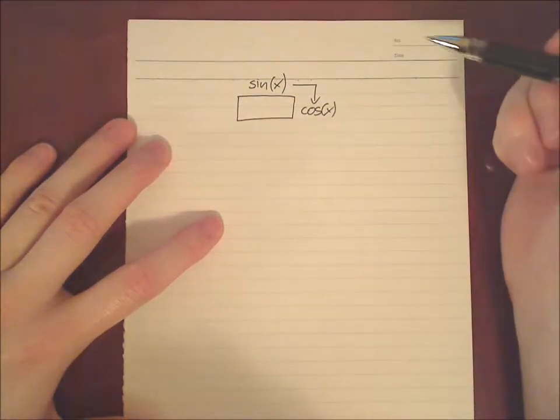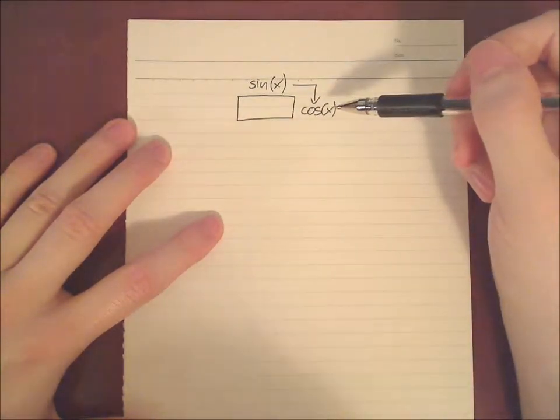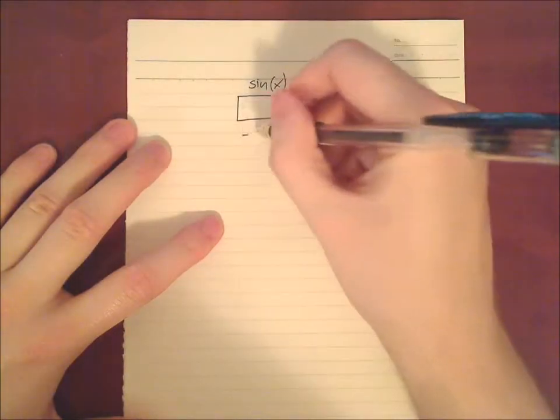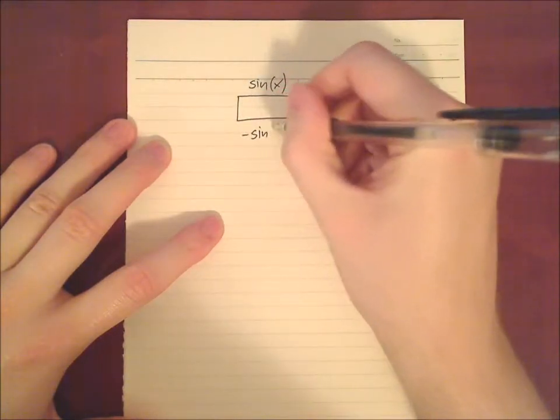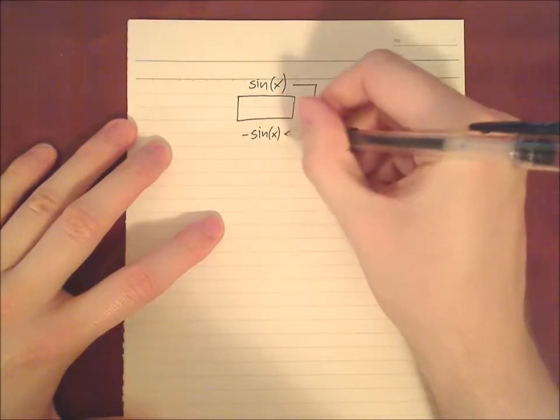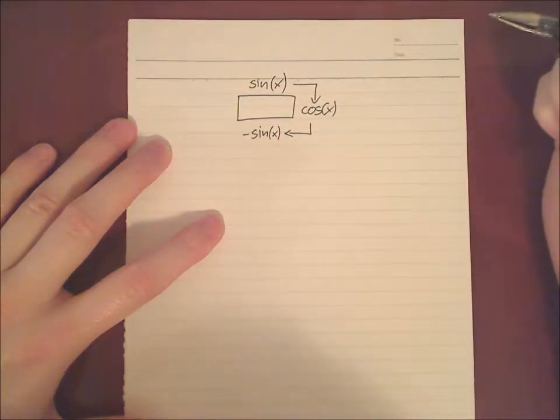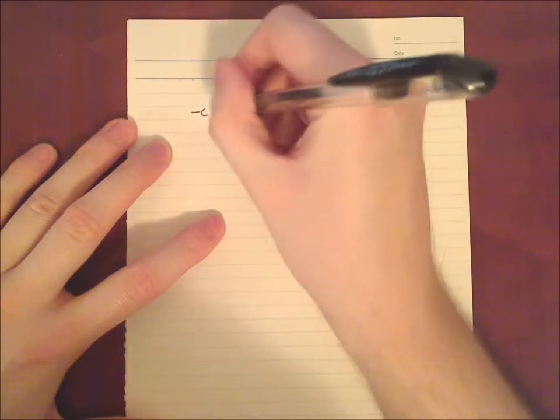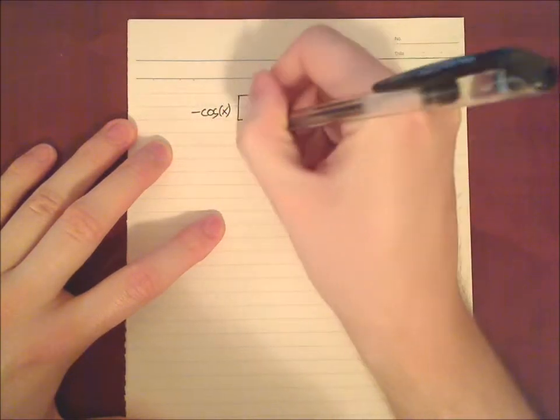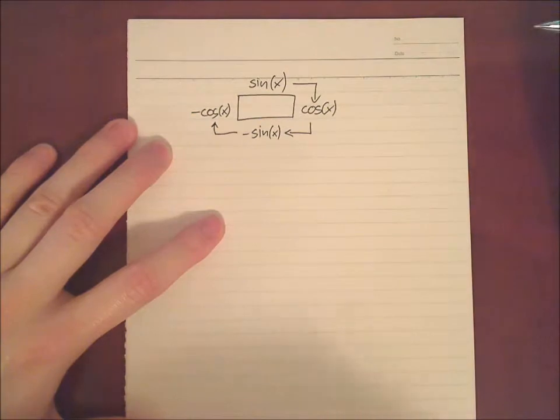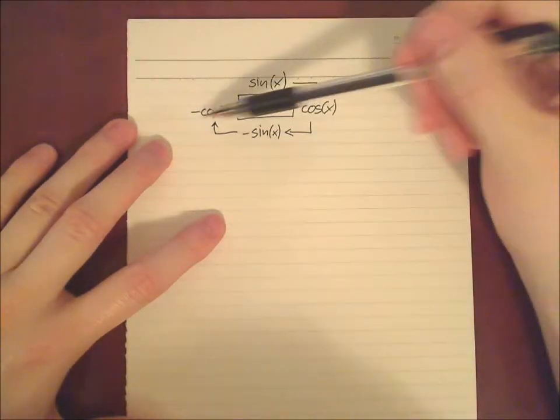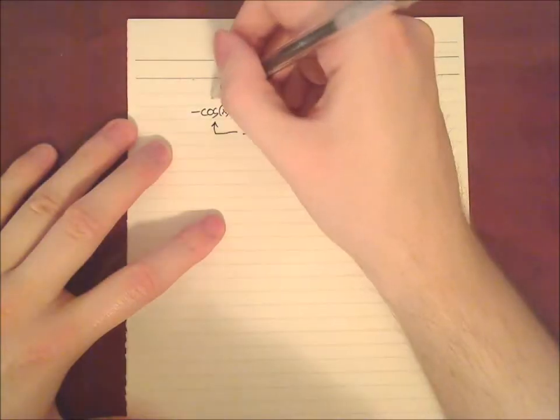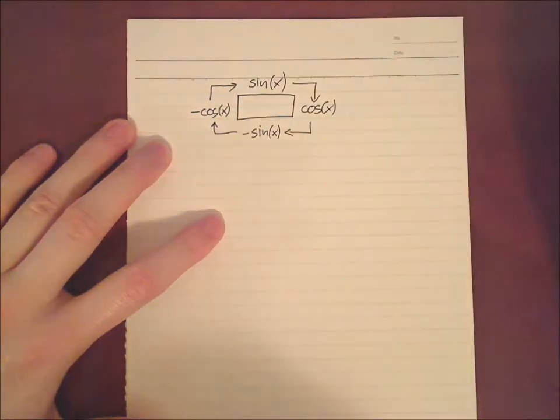If we want to differentiate cosine, we will get minus sine. If we differentiate minus sine, we will get minus cosine. And again, if we differentiate minus cosine, we will receive again sine.